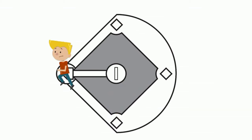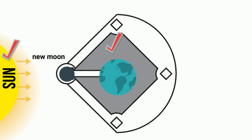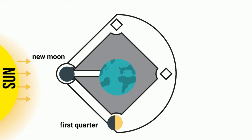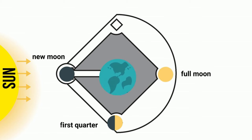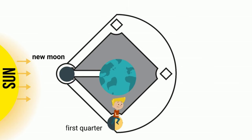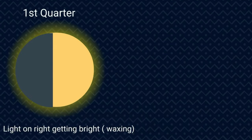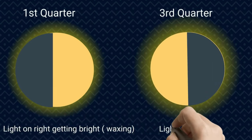Let's begin at New Moon, which would be home plate. It occurs when the Moon is between the Earth and the Sun. First base would be First Quarter. Second base would be Full Moon, which occurs when the Moon is beyond the Earth and reflects the sunlight back. Third base is Third Quarter, and then you are back at New Moon. When you move from New Moon to Full Moon, the light is growing, which is called Waxing. An easy way to remember: light on right getting bright is Waxing.